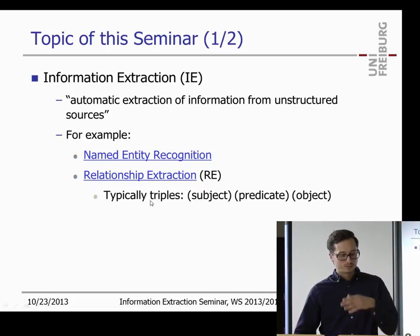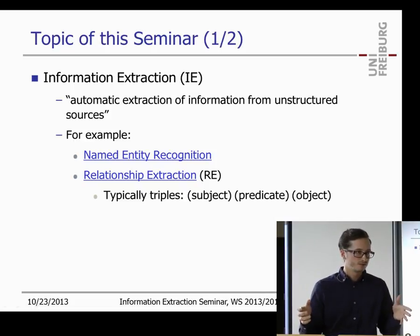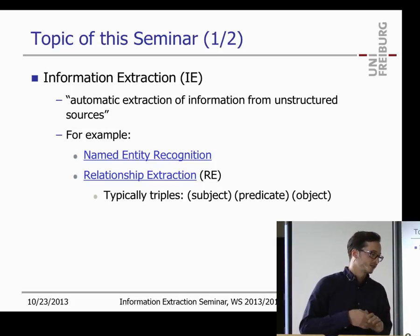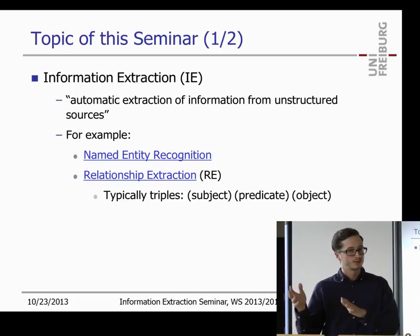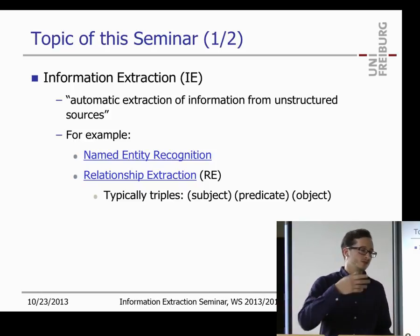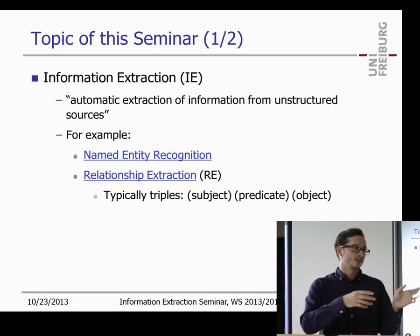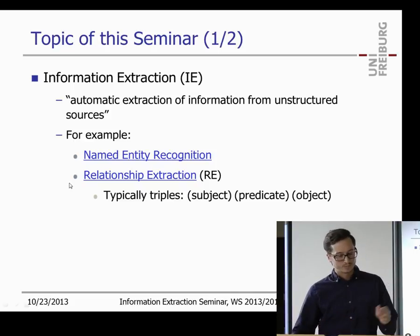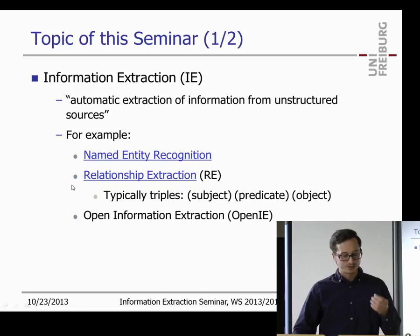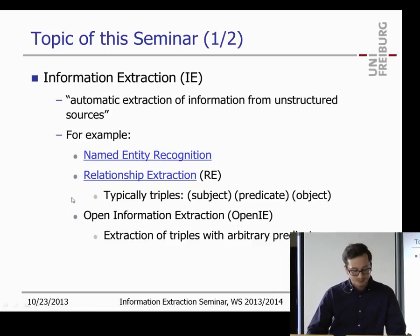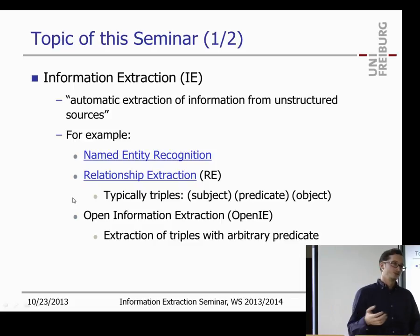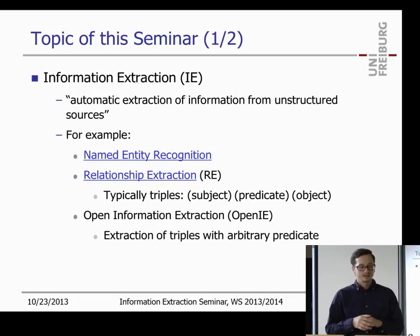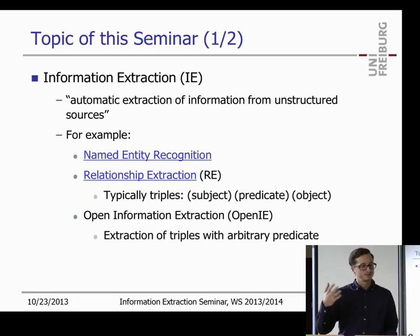Typically for relationship extraction you are given in advance a list of relationships to extract — for example, extract all 'born in' relationships (person was born in location) or extract all 'married to' relationships. Another paradigm typical in information extraction is called open information extraction, where the predicates are not given in advance — you extract all relationships between entities in the text. Relationship extraction and open information extraction will be the two main focuses of this seminar.